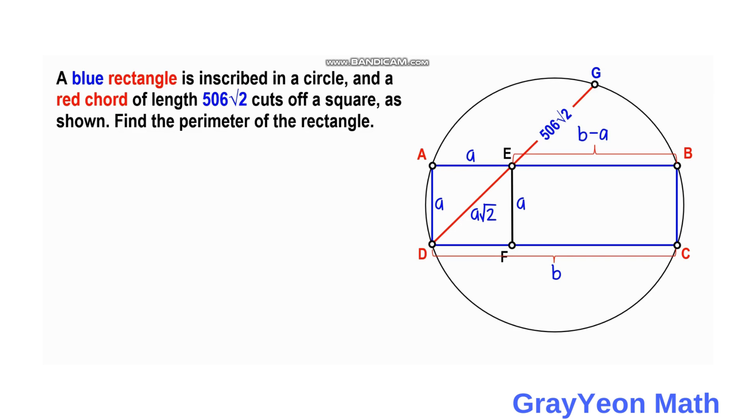Next we get the representation for segment EG. Notice that EG is part of the segment DG, so DG is equal to DE plus EG. DG is given, DE is represented by a√2 and EG. So EG is equal to DG minus DE. We put this a√2 on the other side, so this becomes 506√2 minus a√2.